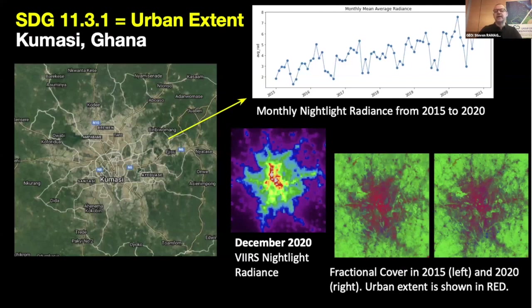This one highlights urban extent, which is SDG indicator 11.3.1, which assesses the ratio of land consumption rate to population growth rate.